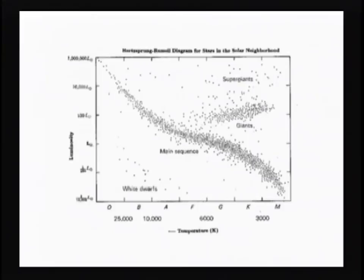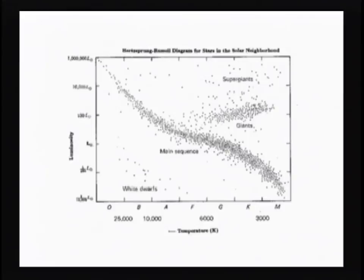On the HR diagram, the vertical axis is luminosity and the horizontal axis is temperature, also labeled with spectral types O, B, A, F, G, K, and M. The upper left has stars that are very hot and very bright, while the lower left has very hot stars that are very dim. The upper right has stars that are very bright but very cool, and the lower right has stars that are very cool and very dim.